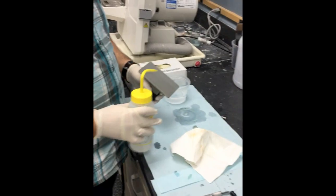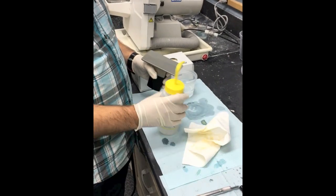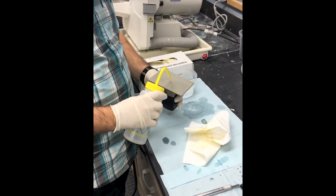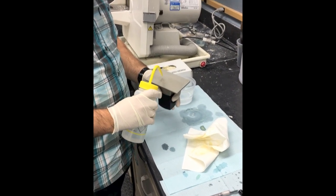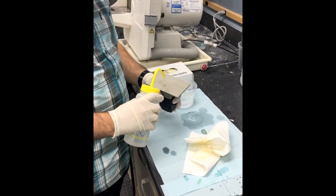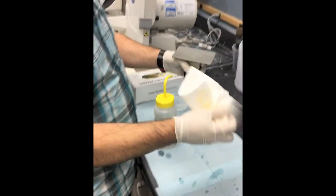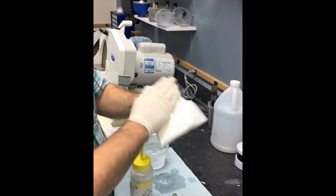To clean your build head, just use a regular paper towel and some of the alcohol that you use for post-processing, which is just regular IPA alcohol. You can get it at any drug store. Squirt a little on your build head and just wipe it down.